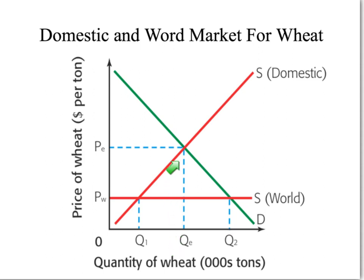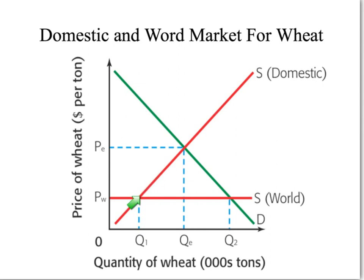The area of this rectangle would be equal to the total revenue generated by domestic producers of wheat — price times quantity gives you total revenue. But once the United States opens itself up to the world market, you can see what happens. The amount of U.S. producers who can participate in the market for wheat — these producers have all been cut out of the marketplace because they're not competitive at a price point of P.E.W.